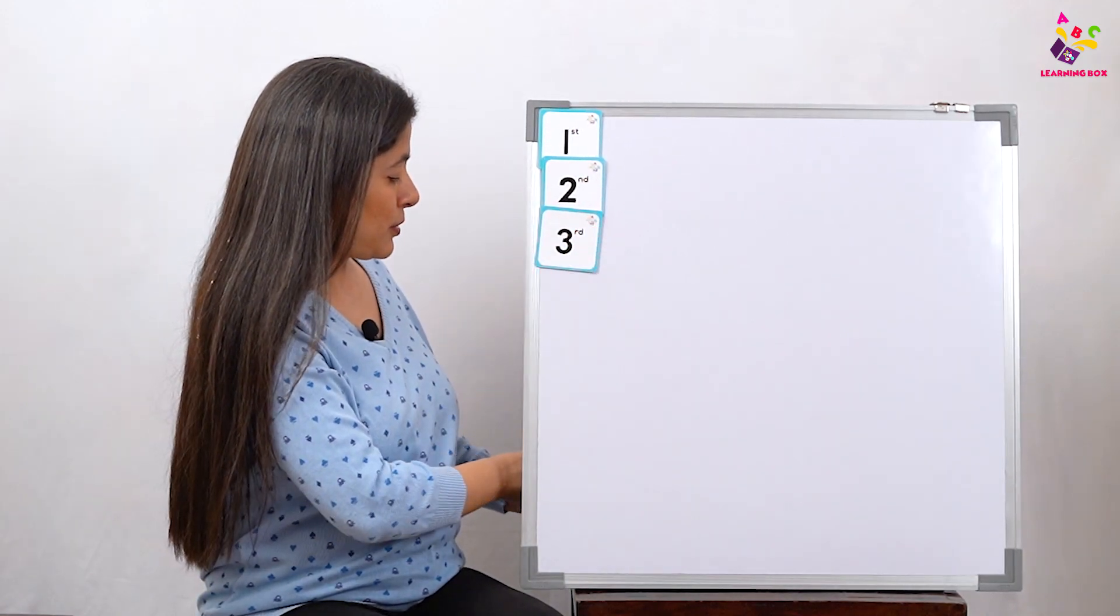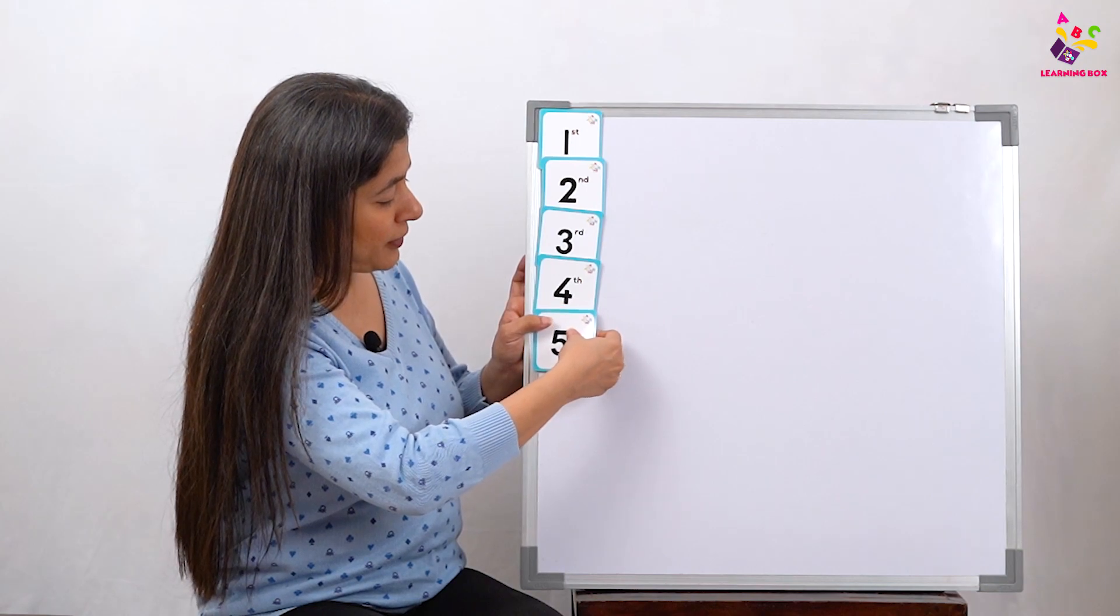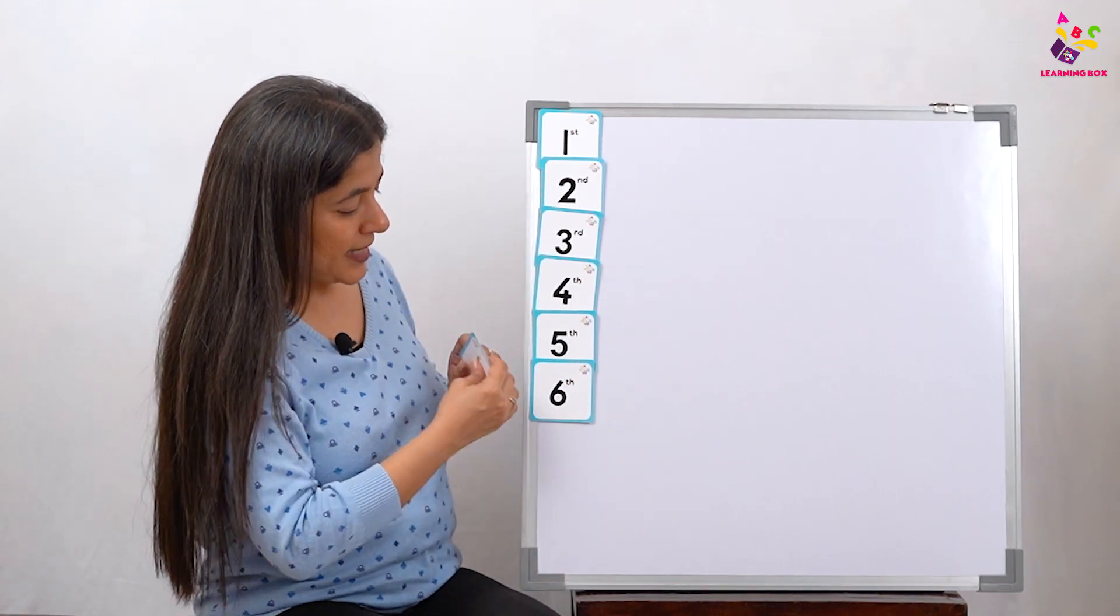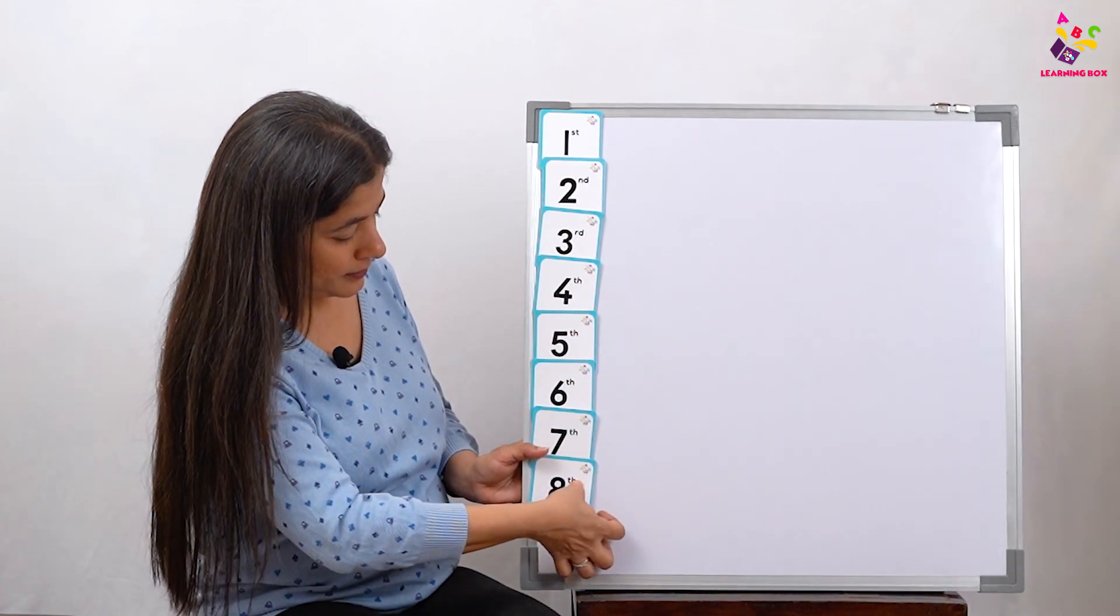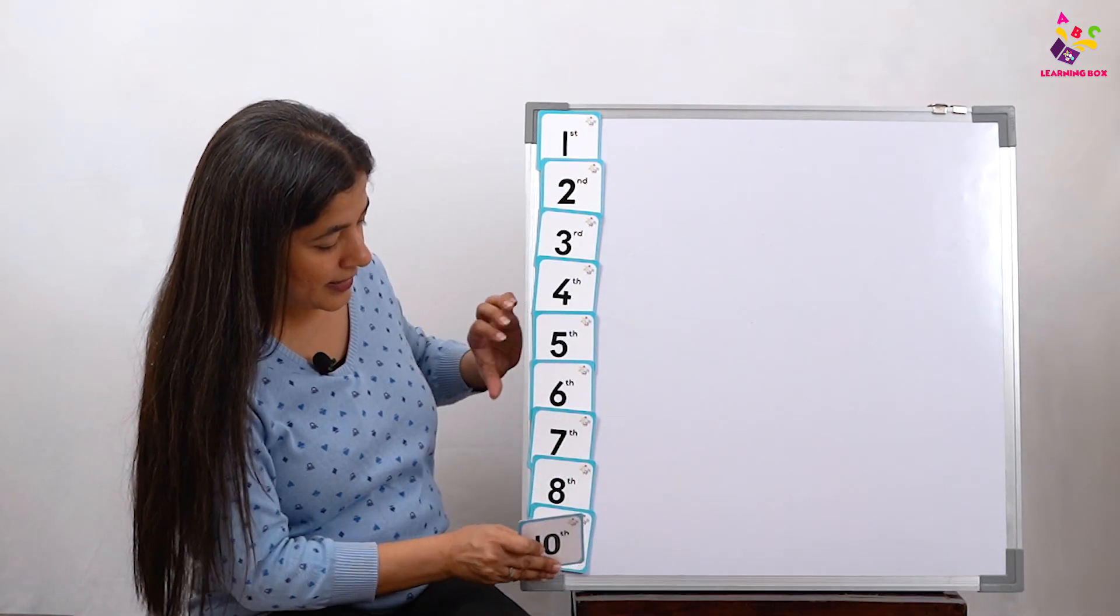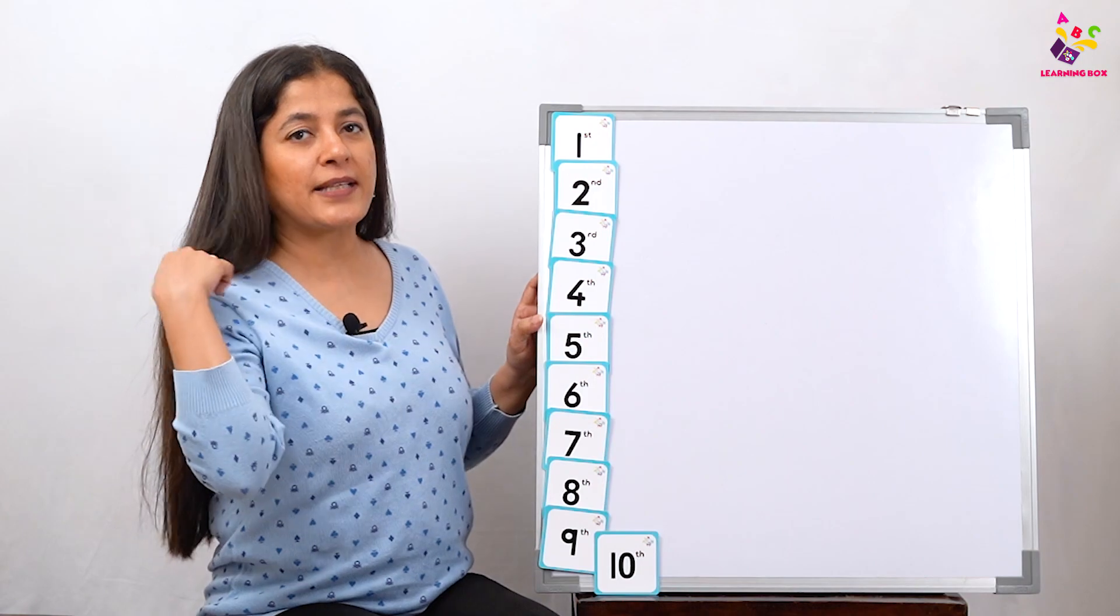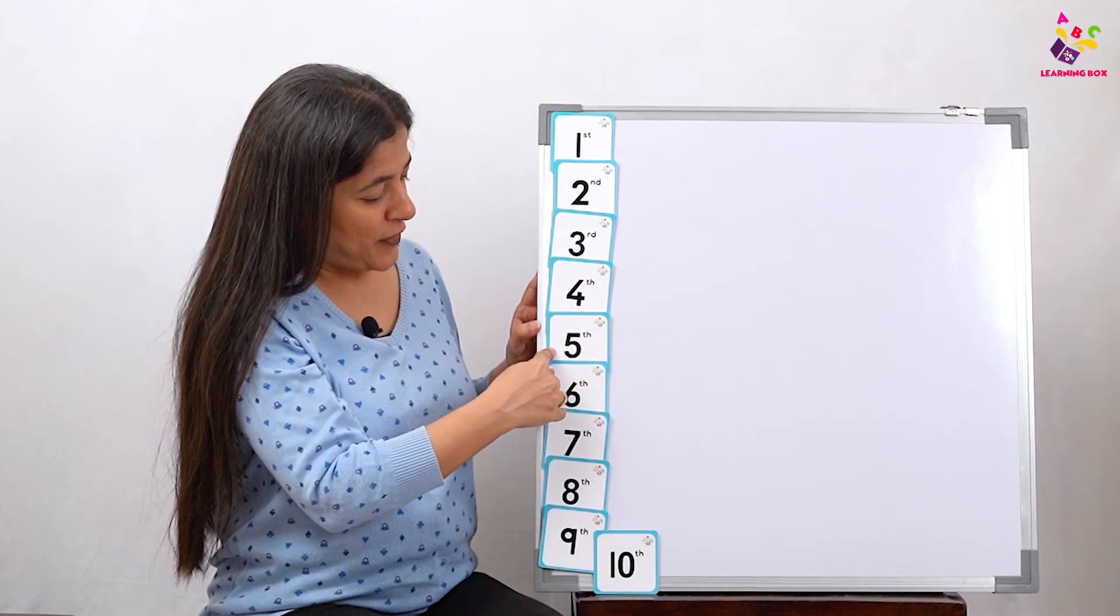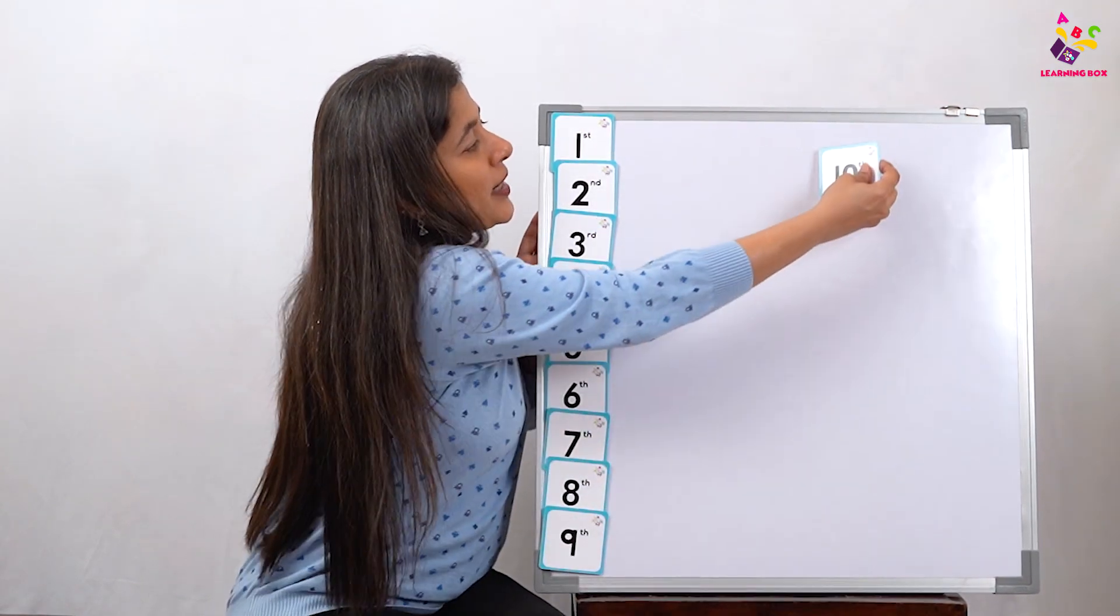Are we counting? Fourth, I'm counting. Fifth, sixth, seventh, eighth, ninth, and the tenth one. I'm going to put it on the side. There's no space. So come on, let's count: first, second, third, fourth, fifth, sixth, seventh, eighth, and ninth. Let's put the tenth one here.